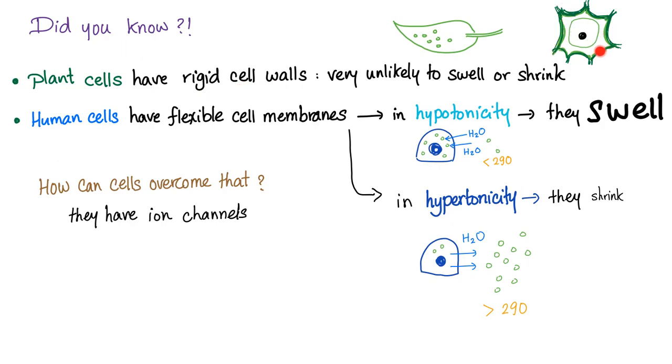Plant cells have a rigid cell wall that you don't have, so they are very unlikely to swell or shrink, but human cells have a flexible plasma membrane, the lipid bilayer membrane. So, in cases of hypotonicity, when the plasma osmolality is less than two ninety, water is gonna flow into the cell and the cell will swell. In case of hypertonicity, when the plasma osmolality is greater than two ninety, water is gonna flow outside of the cell and the cells will shrink. So, how can cells overcome this force? They have some ion channels, sometimes they help, but sometimes they get overwhelmed in cases of disease.